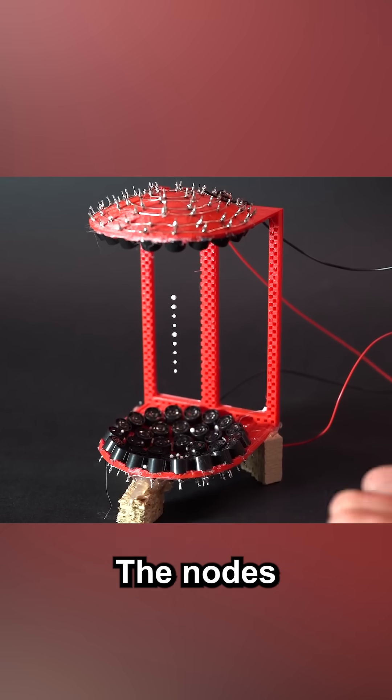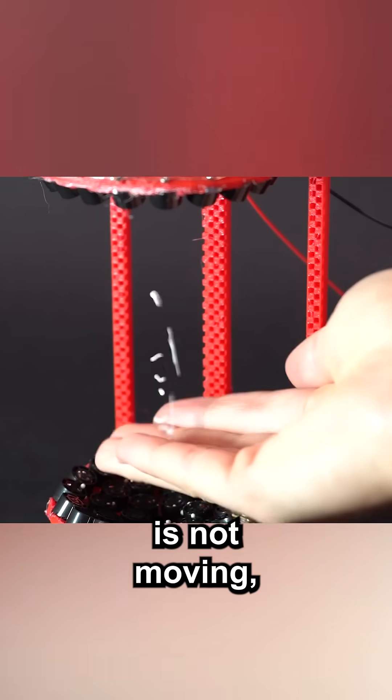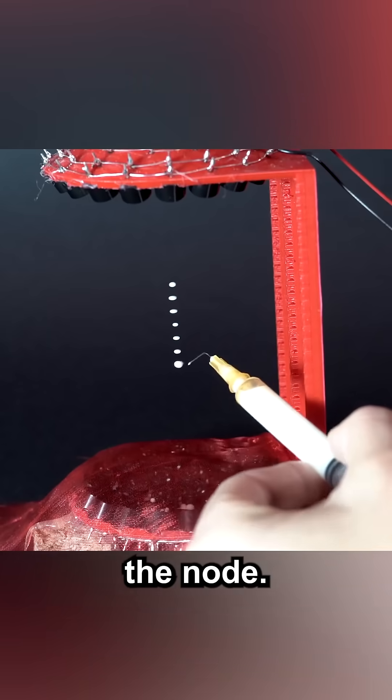The places along the standing wave that aren't moving at all are called nodes. The nodes here are the places where the air is not moving, even though it's moving a lot everywhere else around the node.